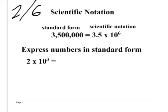So this, 3,500,000, are these zeros significant? Do these matter right here? No, they don't. So what we do is we just write the significant numbers, which is 3 and 5.